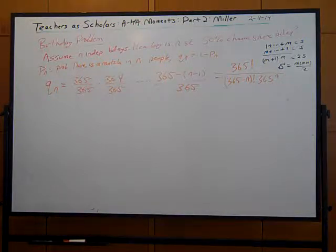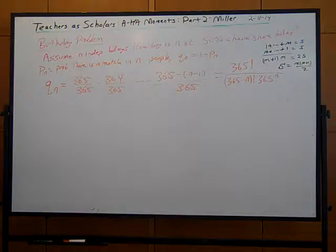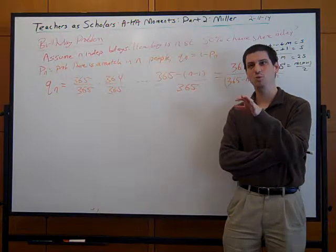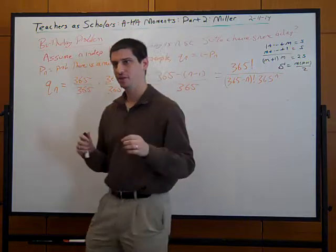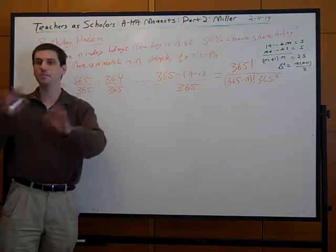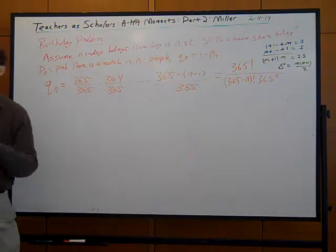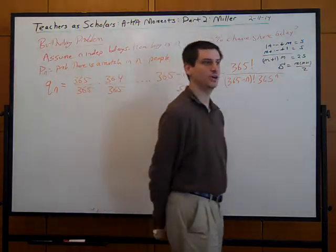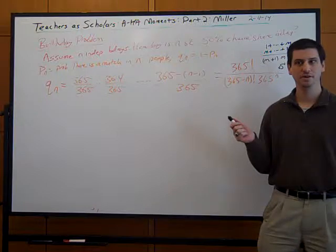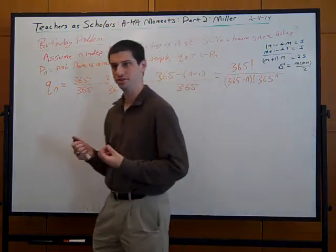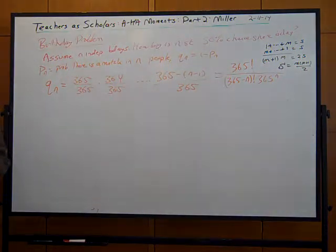The difference between the birthday problem and Johnny Carson's version: specifying ahead of time that I want someone to share Ali's birthday - does anybody share Ali's birthday specifically - is very different from saying I just want there to be any match. It's much harder when you specify who the match must be. It's much easier if you allow any two people to match.